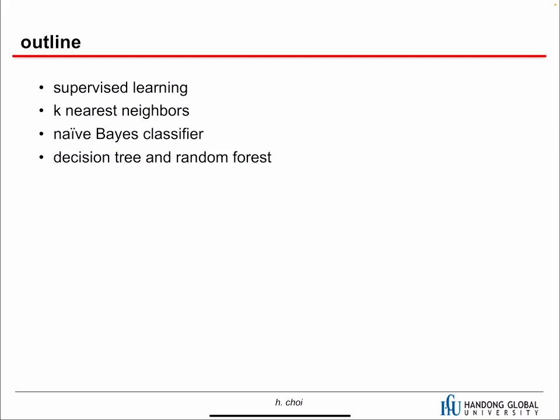This is the outline of this chapter. First, we're going to talk about supervised learning, which covers classification and regression — some basic ideas and concepts shared by both. Then we're going to learn three representative classification algorithms: K-nearest neighbors, Naive Bayes classifier, and decision tree. When we combine a lot of decision trees, we can make a forest — random forest basically has a lot of trees.